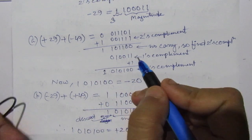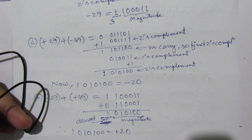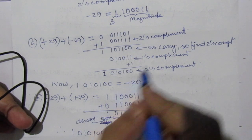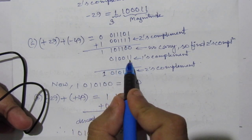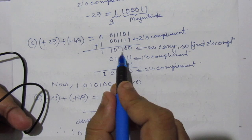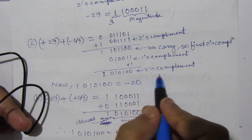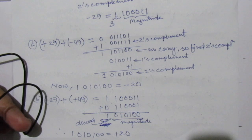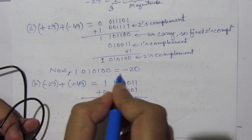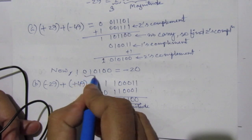The sign is 1, meaning negative. Since there is no carry in this addition, we find the 2's complement of the result to get the magnitude. The 1's complement of 101100 is 010011, and adding 1 gives the 2's complement 010100. The sign is negative, represented by 1. So the result is -20, since 010100 equals 20 in decimal.